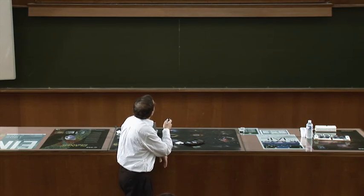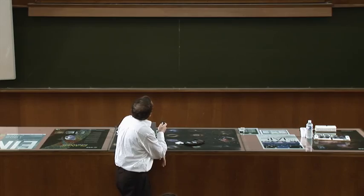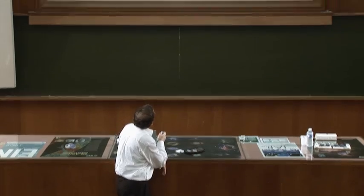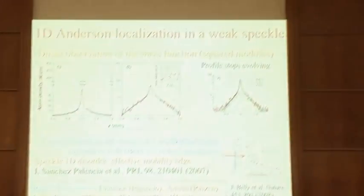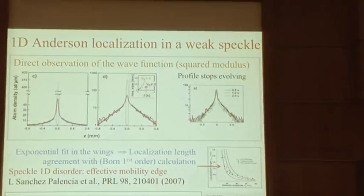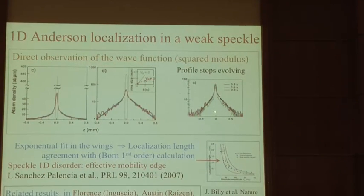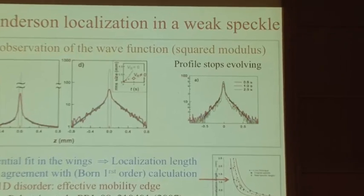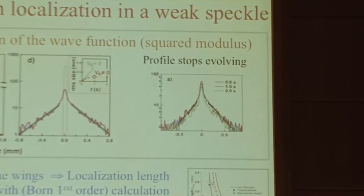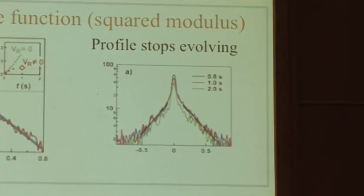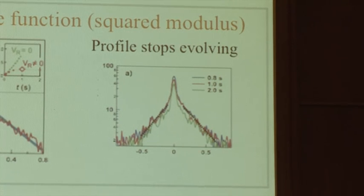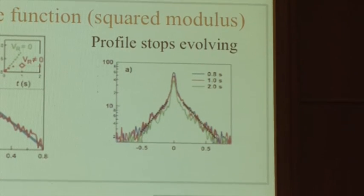Ce qui est remarquable : après 0,8 secondes, 1 seconde, 2 secondes — vous voyez bien que c'est localisé. Ça diminue un petit peu parce qu'on perd toujours quelques atomes en route. Vous partez de vos atomes, ça commence à s'étendre et puis, paf, c'est bloqué. C'est ça la localisation d'Anderson et c'est une visualisation directe.